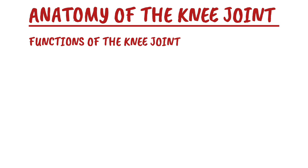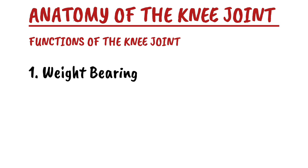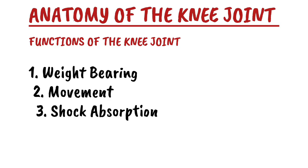Now let's talk about the functions of the knee joint. The knee joint serves multiple functions: first, weight bearing — it supports the body's weight during standing, walking, and running. Second, movement — it allows flexion, extension, and slight rotation. Third, shock absorption — the menisci and cartilage help absorb impact forces. Fourth, stability — ligaments and muscles provide stability for movement and weight bearing.